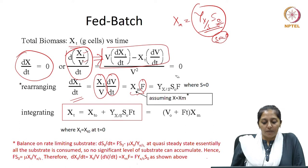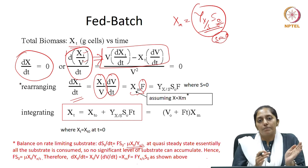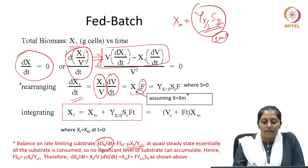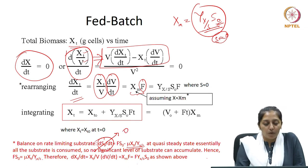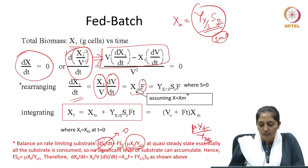Now let us do a substrate balance. The rate at which the substrate is getting accumulated inside the reactor equals the rate at which substrate is coming inside minus the rate at which substrate is getting utilized inside the reactor. At quasi-steady state the amount of substrate coming inside is instantly getting utilized and there is no net substrate accumulating inside the reactor. Hence dSt/dt can be assumed as 0 — whatever substrate is coming in is getting consumed, so there is no accumulation. Hence f·s₀ becomes equal to μ·xt/(yx/s) as shown above.